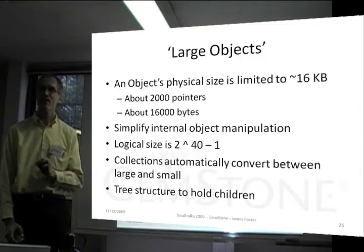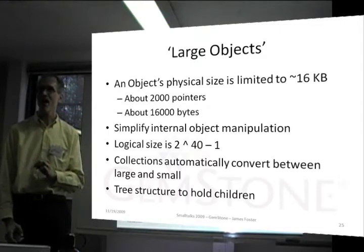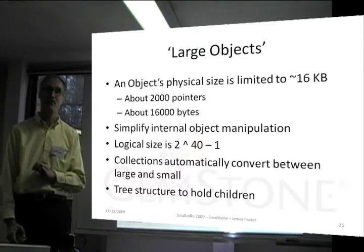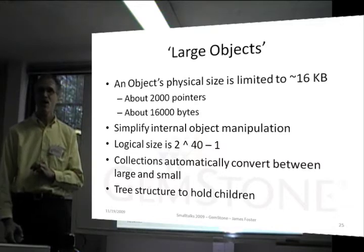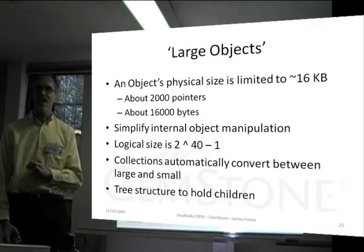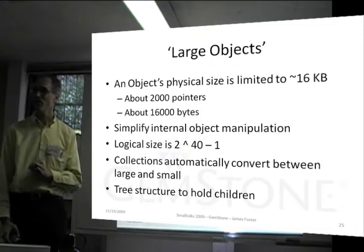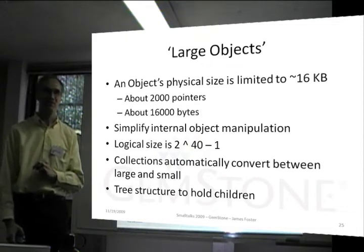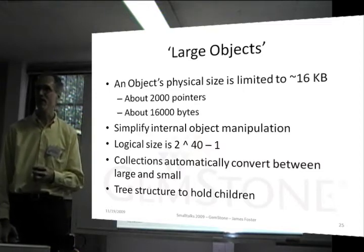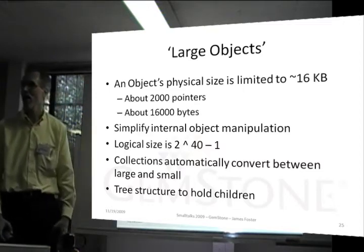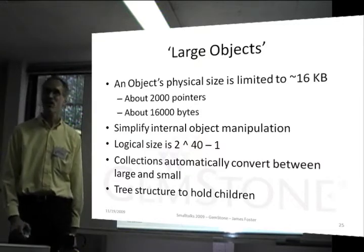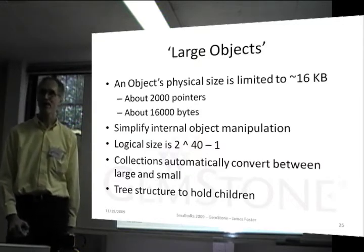There's a limit of about 2,000 to the number of numbered instance variables an object can have. That makes for a pretty small collection. So if you wanted to have a collection of objects — a set of customers, employees, products, or parts in a catalog — you'd want to be able to do more than 2,000.